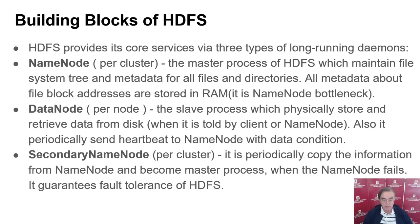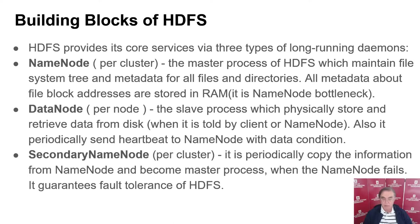There are three basic daemons associated with HDFS. The name node, provided on a cluster basis, is the process that maintains the file system and metadata for all files and directories — everything is stored in memory, and if there's just one node, it can be a bottleneck. There's also a secondary name node per cluster, which serves as backup to the name node in later versions of Hadoop. On every node that stores data, there is a data node daemon in charge of storing and retrieving data from disk. It also sends heartbeats to indicate it is alive; if the heartbeat stops, the node is considered down.